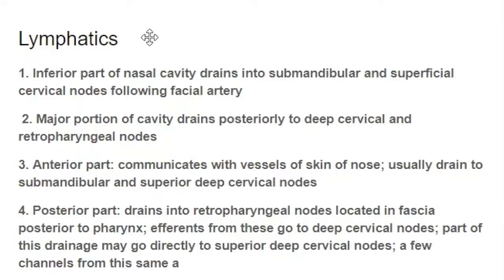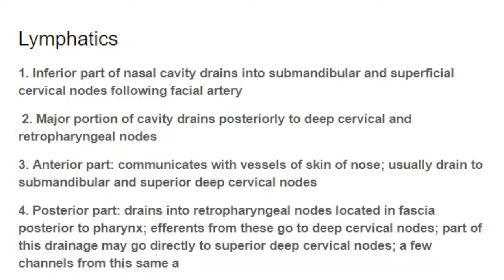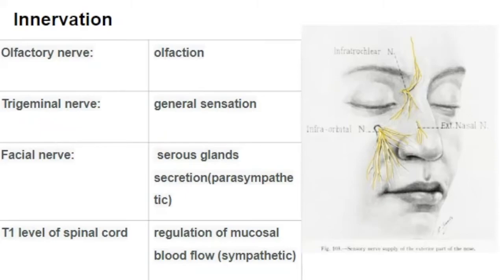For the lymphatics, lymph from the anterior region drains into the submandibular lymph nodes, the posterior region drains into the upper deep cervical nodes, and some lymph also drains into the retropharyngeal nodes. These are the main lymphatic drainage routes from the nasal cavity.